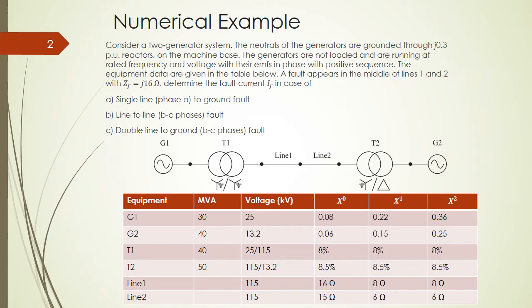Now we have a fault occurring in the middle of line 1 and line 2, and the Z-fault is j0.16 PU. We need to calculate the fault current in the case of a single line-to-ground fault, a line-to-line fault, and a double line-to-ground fault.